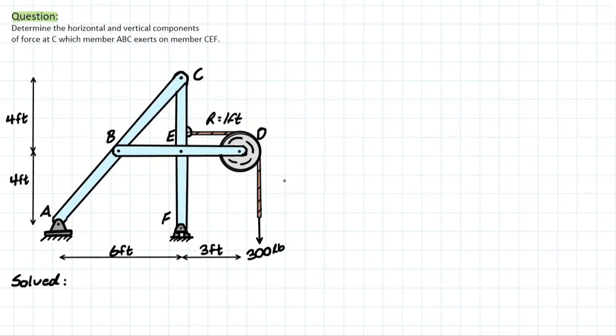The problem asks us to determine the horizontal and vertical components of the force at C, which member ABC exerts on member CF. This is asking for the reaction forces at the pin at C. So we're looking for Cy and Cx. Let's get the tension part out of the way and analyze this pulley.